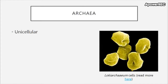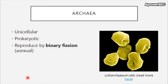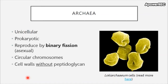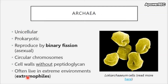Now let's discuss archaea. Archaea are unicellular and also prokaryotic — they lack a true nucleus, having more of a nucleoid region without a membrane-bound chromosome. They also reproduce by binary fission and have circular chromosomes. They look very similar to bacteria in those respects, but they are very different in other ways we'll get to later.